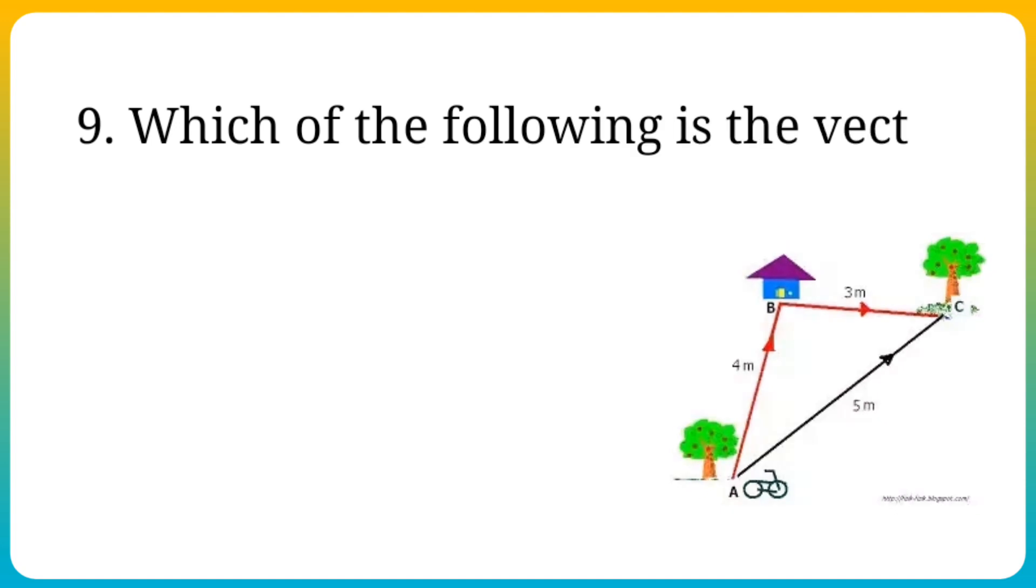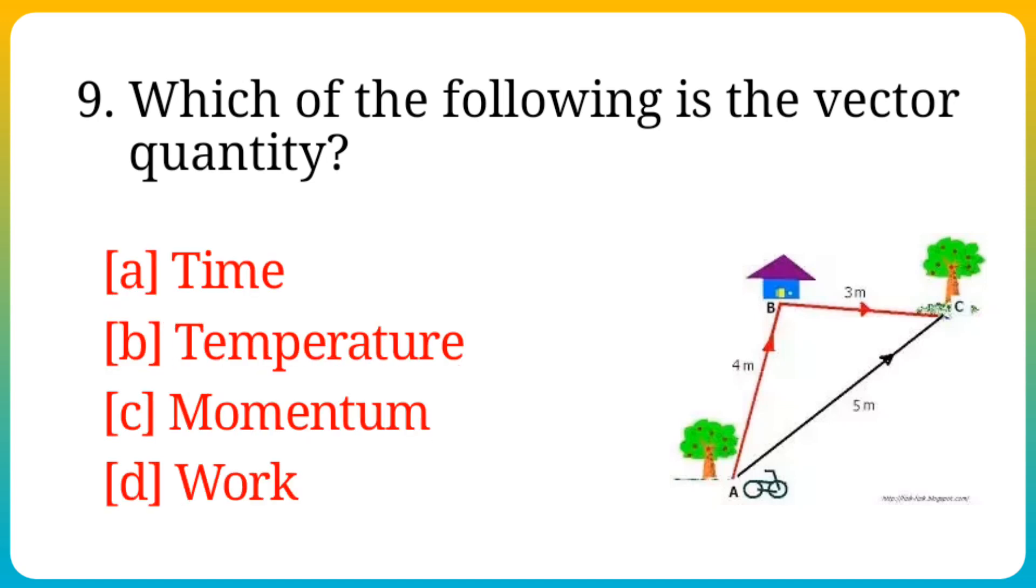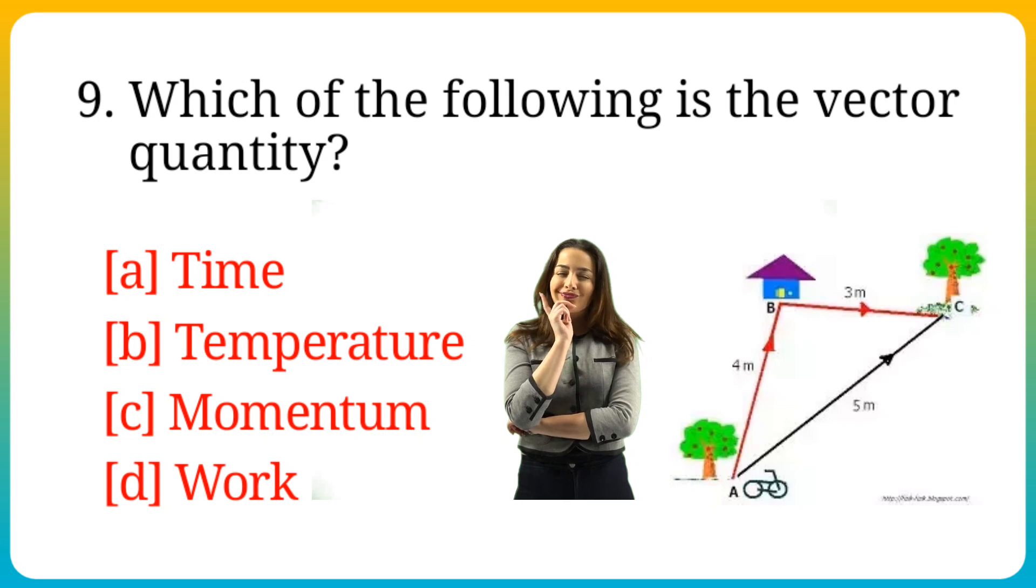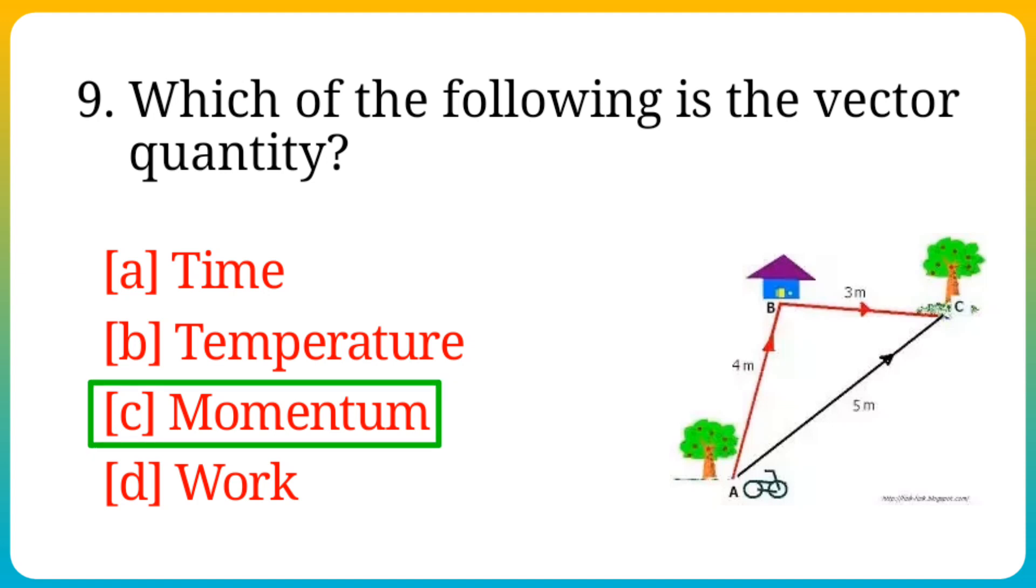Question number 9. Which of the following is the vector quantity? Options are: A. Time, B. Temperature, C. Momentum, D. Work. Answer is option C. Momentum.